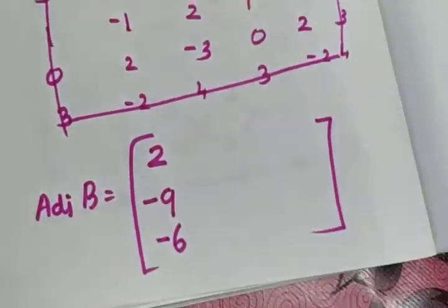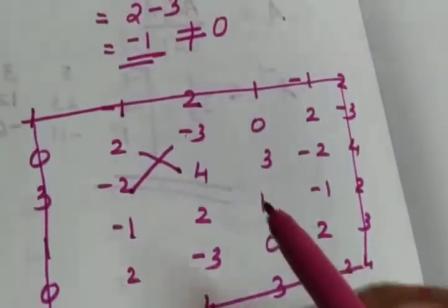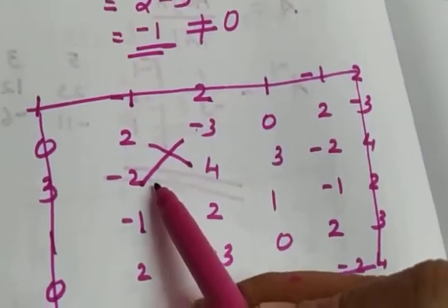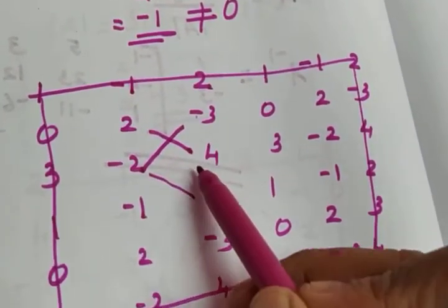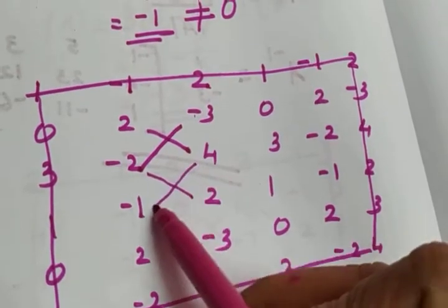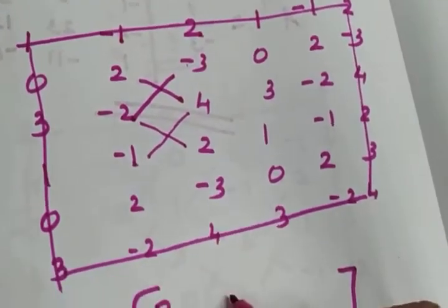For the second column of the adjoint: -[(-1)×4 - 2×2] = -(-4 + 4) = 0. Then: 1×4 - 2×3 = 4 - 6 = -2. The second column values so far: [0, -2, ...].